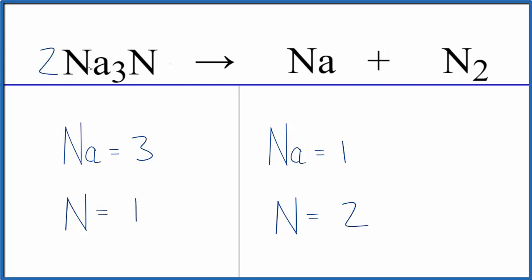If I put a 2 in front of the sodium nitride, I would have 3 times 2, so now I have 6 sodium atoms, and 1 times 2, which balances the nitrogens.